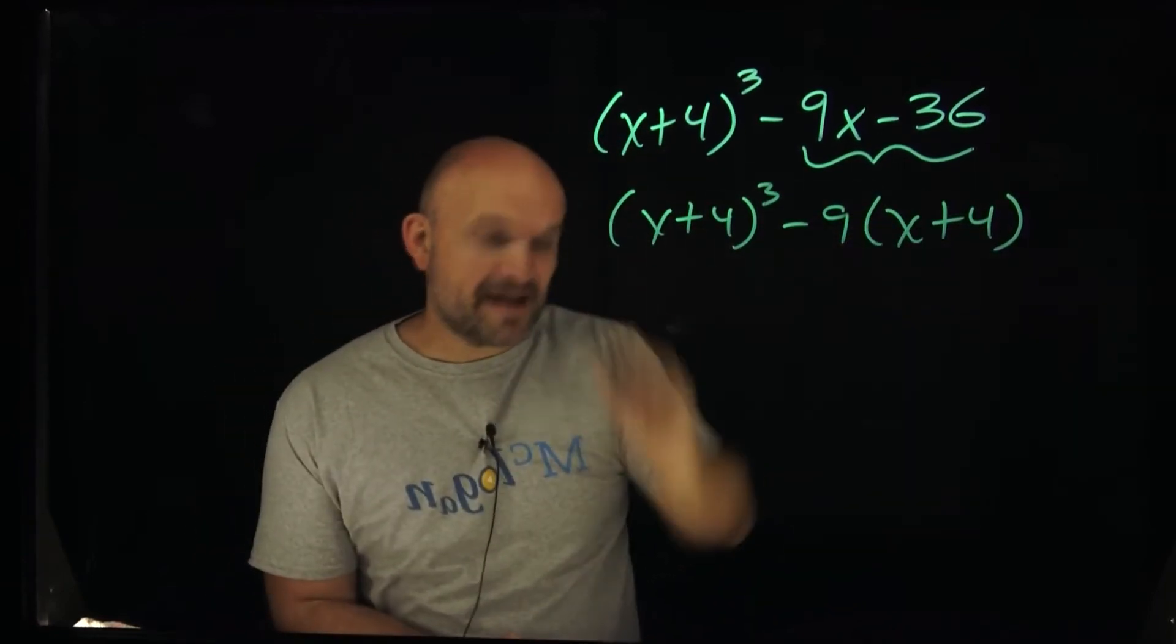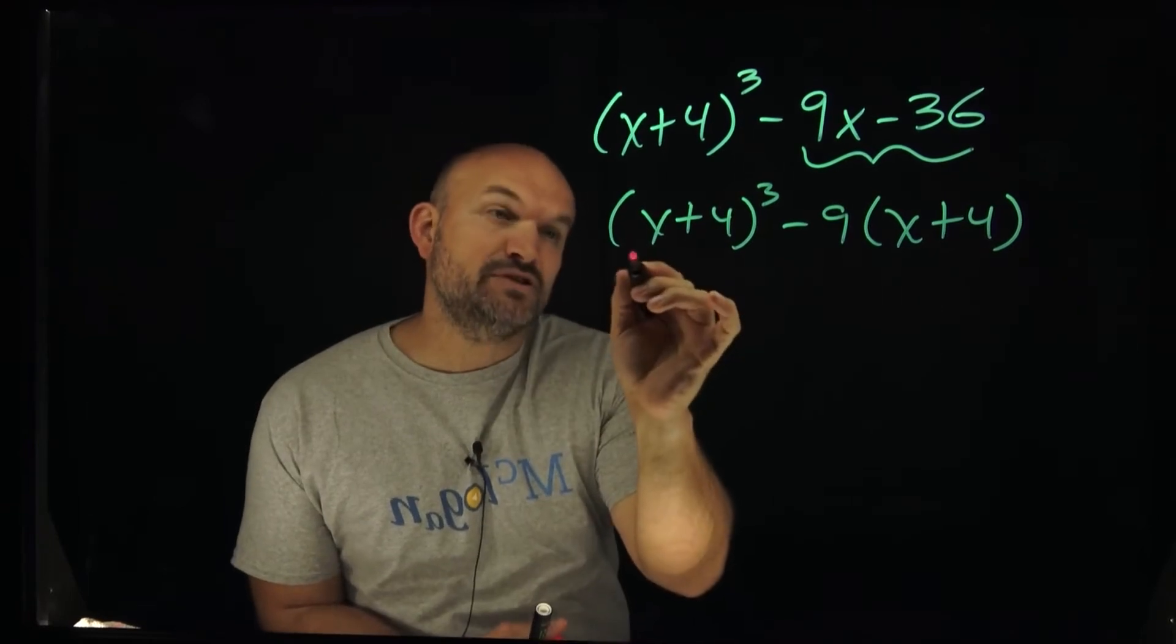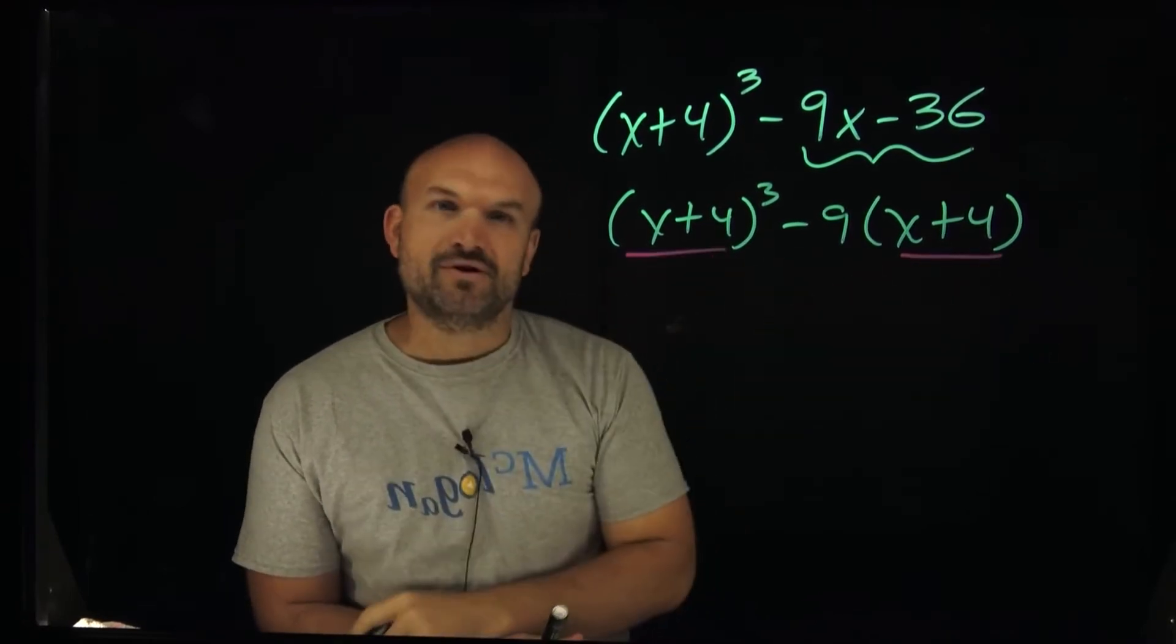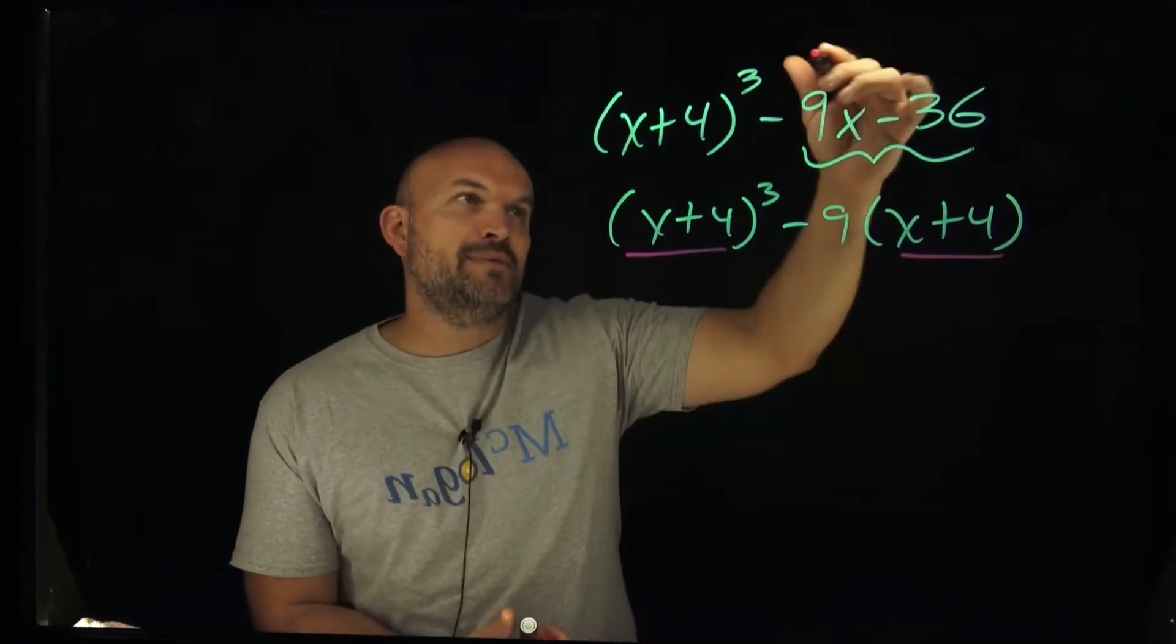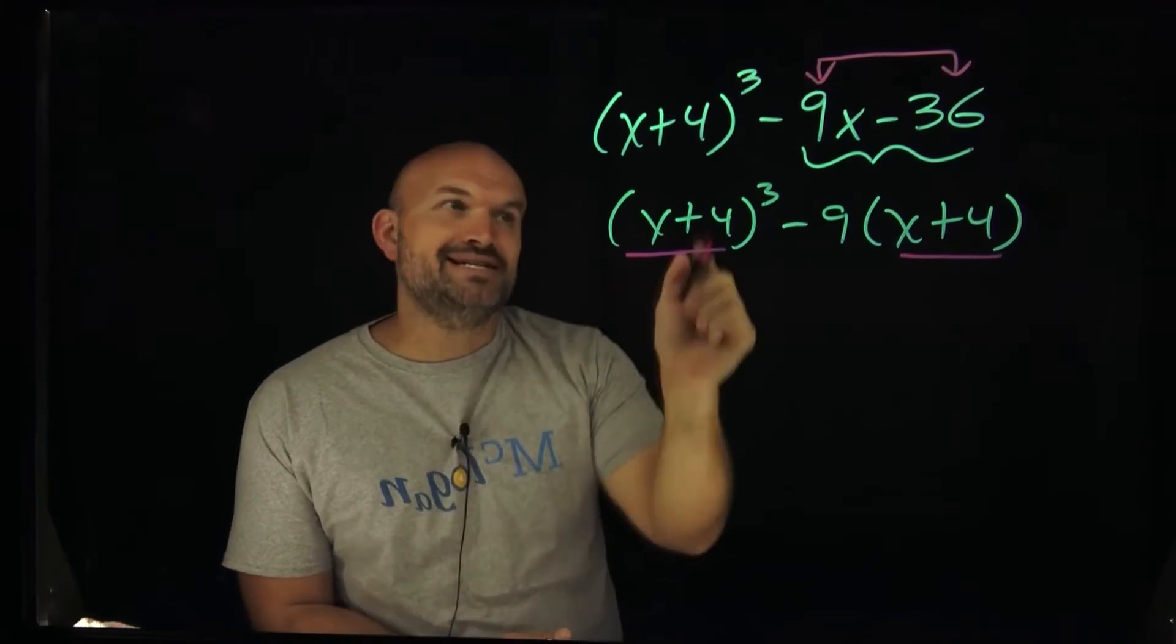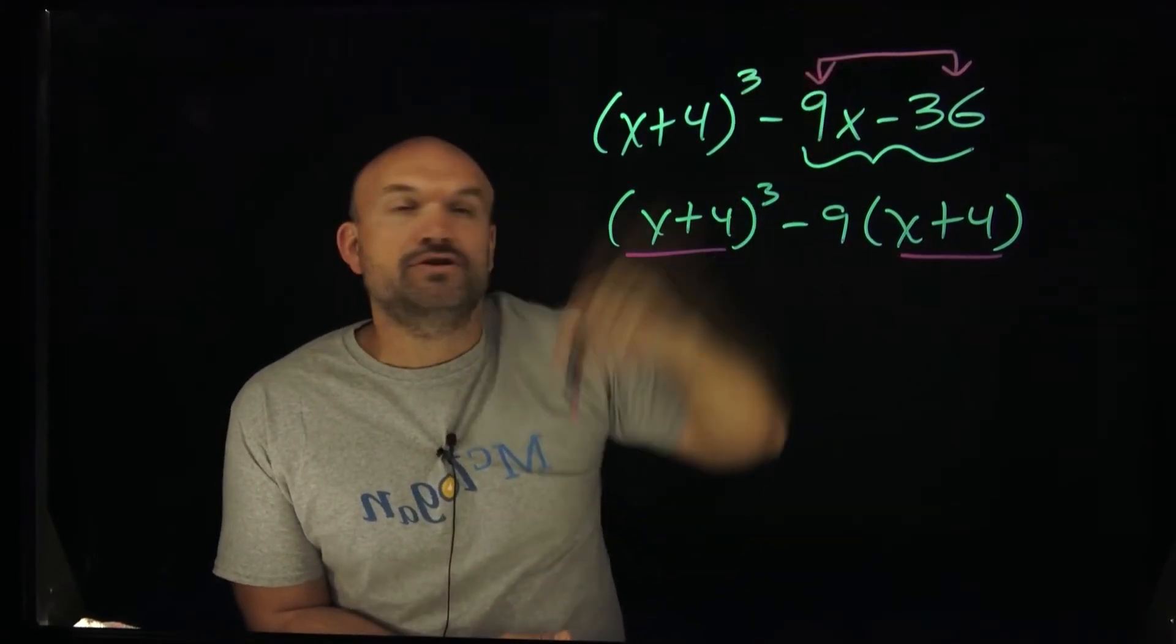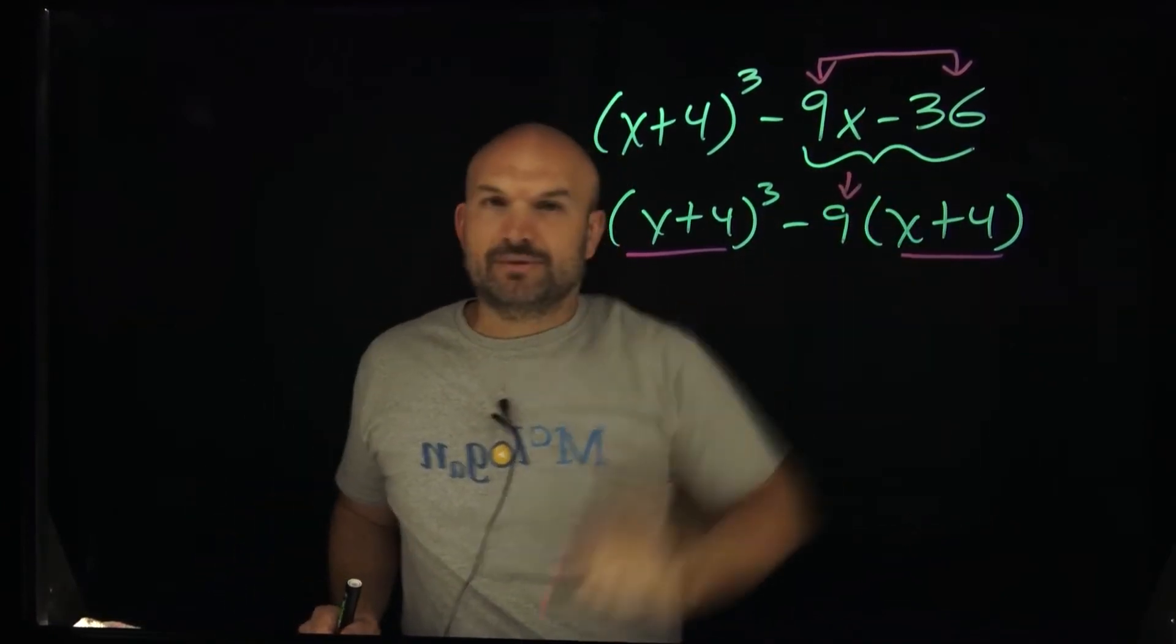So now you can see by actually factoring this out, I now have two terms that are actually the same, or two expressions that are the same. I have the x plus four and the x plus four. So if you remember by factoring out the GCF, what you were doing, or if we go back to this original problem, what did we do? They both shared a negative nine, because negative nine could evenly divide into those two terms. So I factored out the negative nine, and then I wrote it out here as a multiplication.